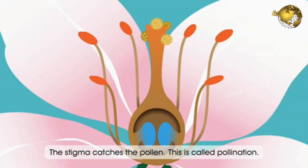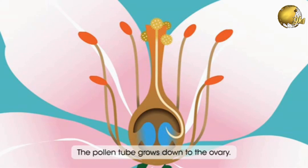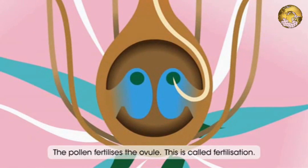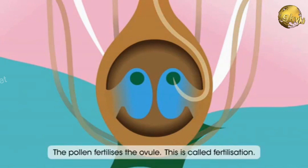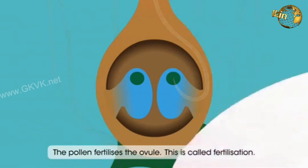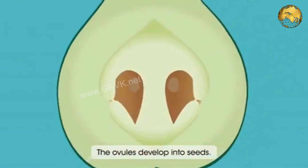After a male's pollen grains have landed on the stigma during fertilization, pollen tubes develop within the style, burrowing down to the ovary where the sperm fertilizes an ovum in the ovule. After fertilization, the ovule develops into a seed in the ovary.